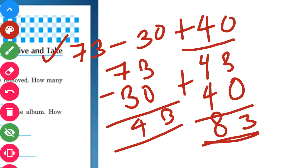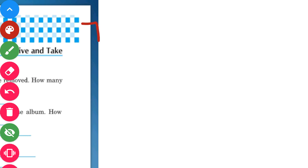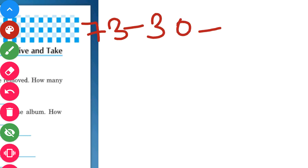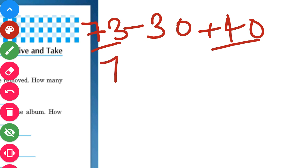Now kids, let us also do this question using the regrouping method. So our question was 73 minus 30 plus 40. What we will do now: we will add 73 and 40 first, and then subtract 30.